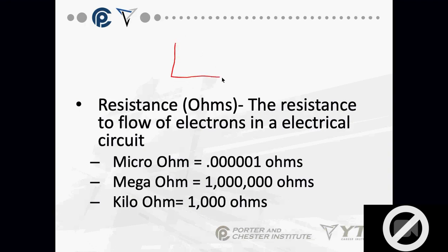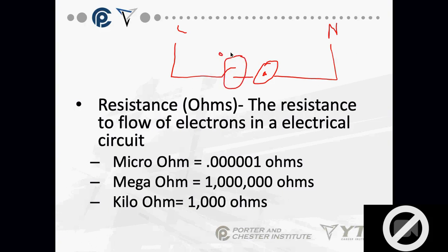Resistance is the opposition to the flow of electrons in an electrical circuit. Looking at my circuit with a switch — if the switch is open, what's the resistance? An open switch has infinite resistance. If I disconnect power and take an ohm reading across an open switch, the meter will display OL, which stands for open line, open load, or infinite.